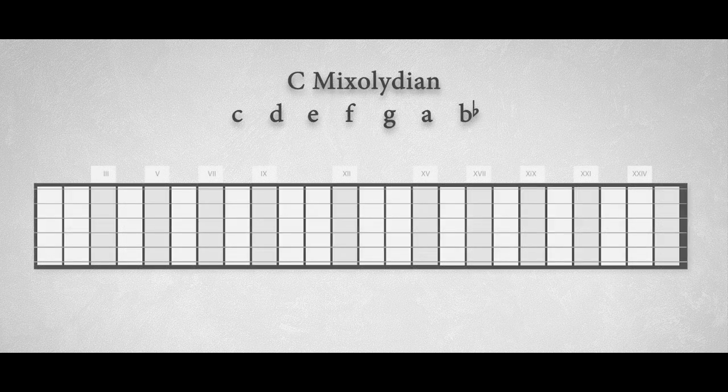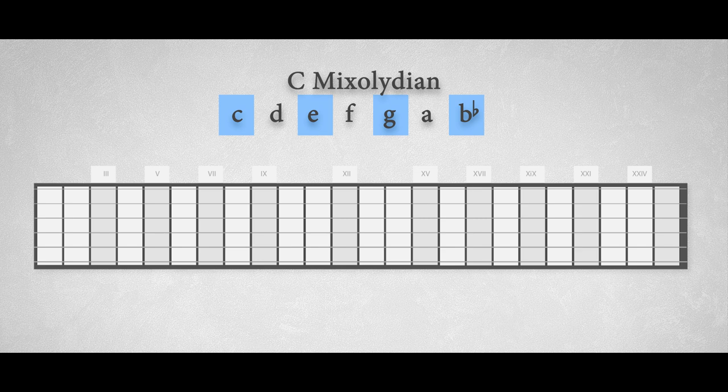Let's look at the C Mixolydian mode. In C Mixolydian we just have to play a C dominant 7 arpeggio to outline this mode, because the minor 7th, the note Bb in this case, is the characteristic note in this mode. The pattern goes like this, C, E, G and Bb.